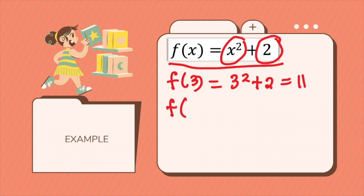What if your function's input is negative 5? So the same thing. You square negative 5 and then you add 2. Squaring negative 5 will give you 25 plus 2 will be 27.